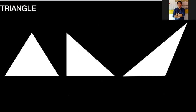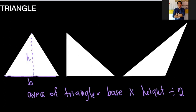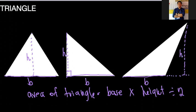For a triangle, we know that to find the area we multiply the base by its height and divide by two. Remember from our previous lesson: in a right-angle triangle, if this is our base then the height is perpendicular to it. For an obtuse triangle, if this is our base, we extend it so the height is outside. That is how to find the area of a triangle.